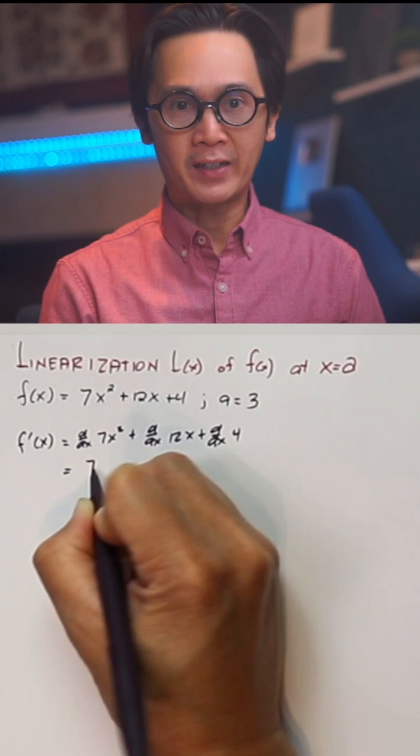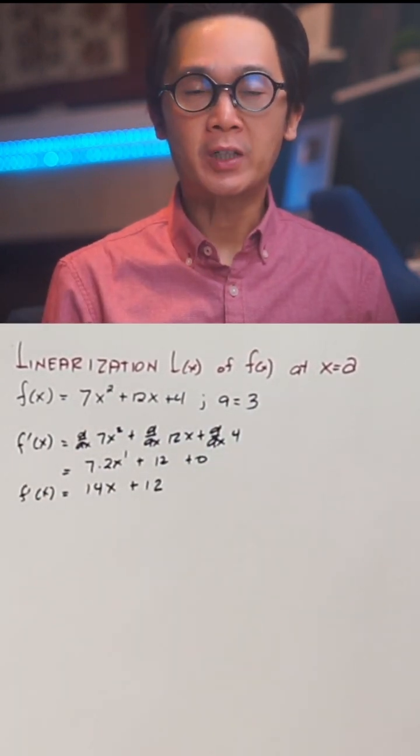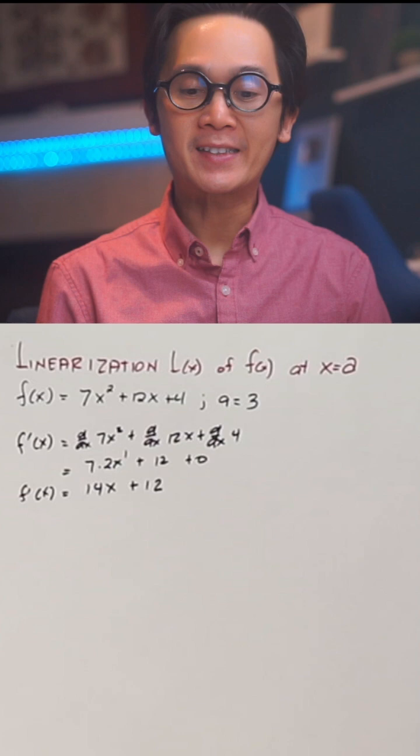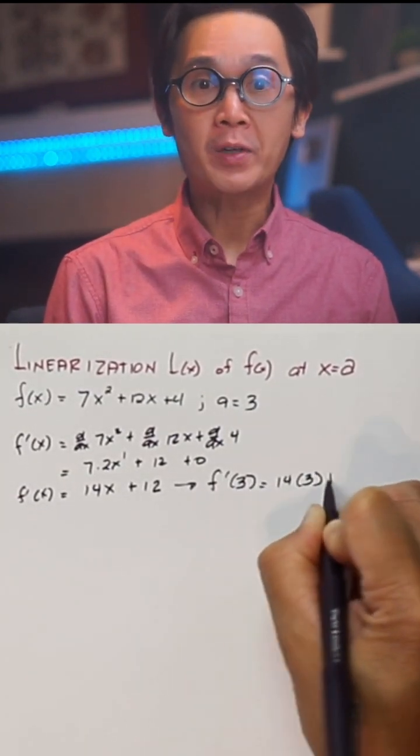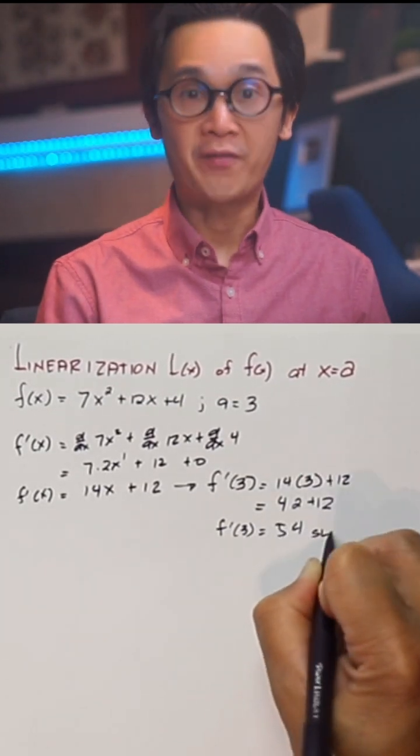Step 1, let's find the derivative of f of x. After finding the derivative, we're going to find the slope at x equal to 3 by plugging in the value of 3 to f prime. So our slope at x equal to 3 is 54.